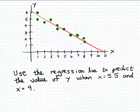In this example we're given a scatter plot of a table of data pairs and a regression line that is drawn to fit that scatter plot.